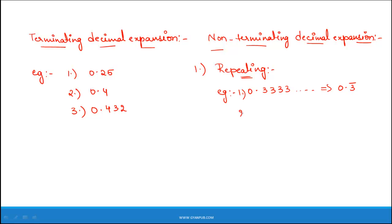Let us take another example: 1.678678678 and so on. Here the three digits 678 are repeating. So this can be written as 1.678 bar. The bar indicates that the three digits 678 are repeating themselves.